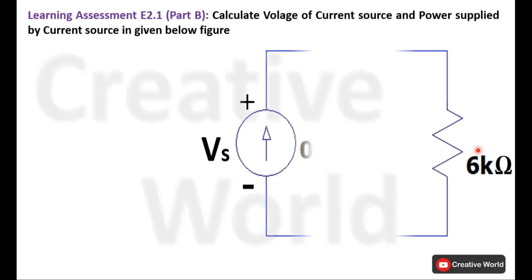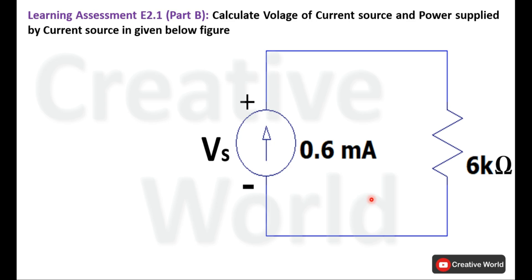Now move to the next part — Part B: calculate the voltage of the current source and the power supplied by the current source in the given figure. In this circuit, the resistance and current through the resistance are given, so we can use Ohm's Law to calculate voltage across the resistance. Because of the parallel connection, these same voltages will also appear across the current source.